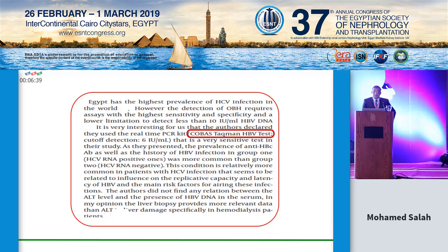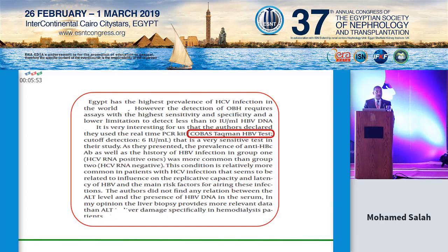The prevalence of anti-hepatitis B core antibody as well as the history of hepatitis B virus infection in group 1 (hepatitis C virus RNA positive) was more common than in group 2 (hepatitis C virus RNA negative). This condition is relatively more common in patients with HCV infection, related to its influence on the replicative capacity and latency of hepatitis B virus. The authors also found no relation between transaminase levels, especially alanine transaminase, and the presence of hepatitis B virus DNA in the serum — so do not rely on transaminase level alone.